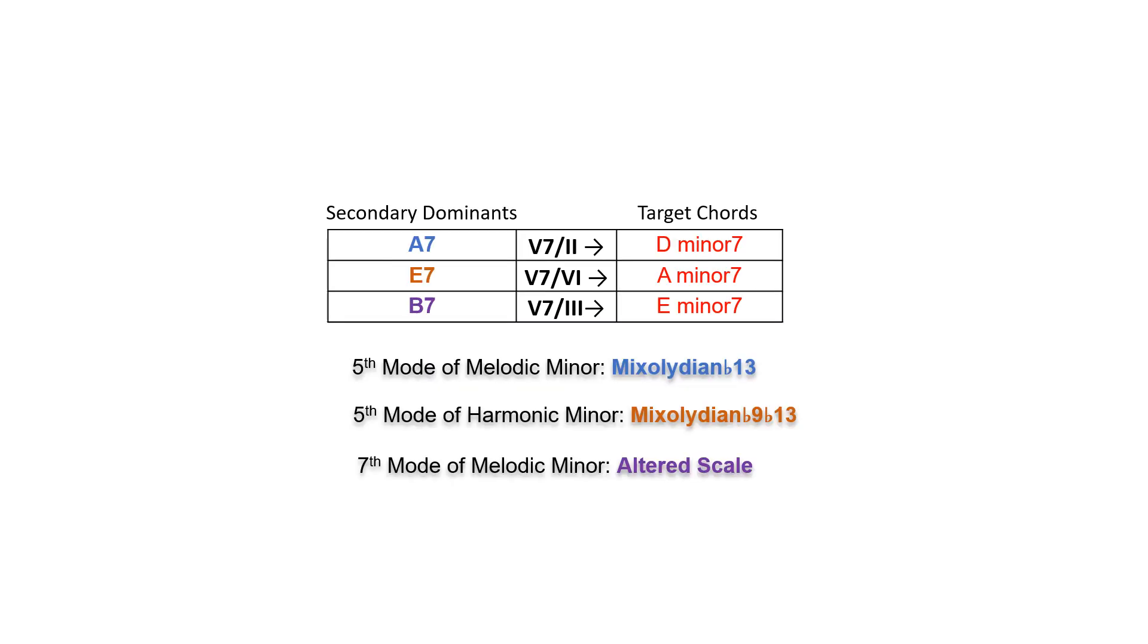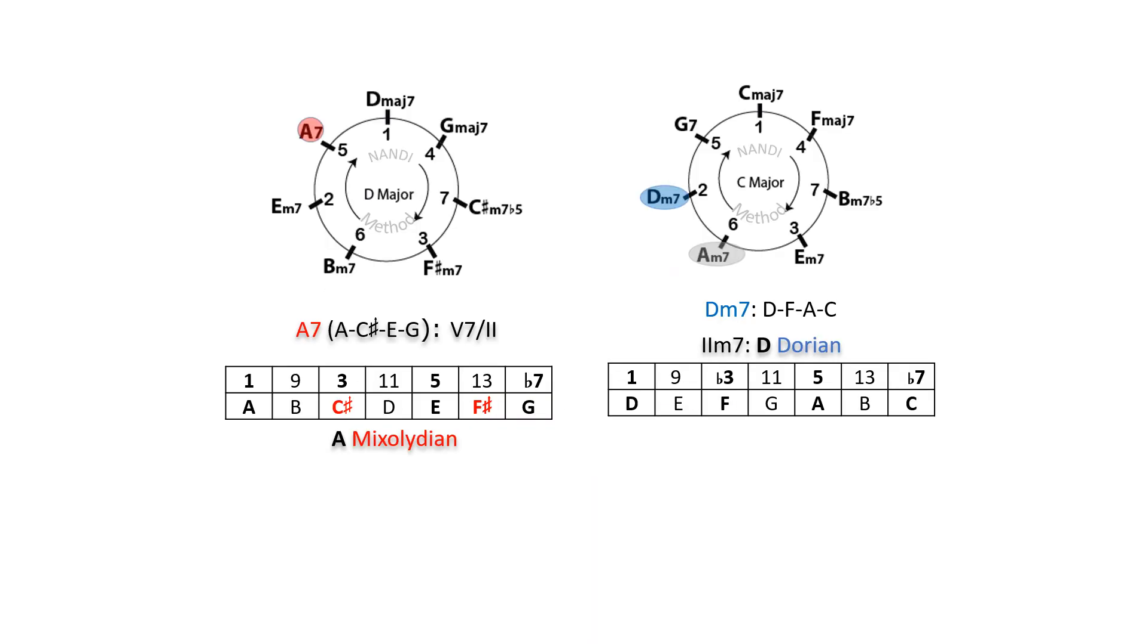When the target chord is minor, secondary dominance borrow from tonal minor scales, such as melodic minor and harmonic minor. For A7, borrowing A mixolydian, the fifth mode of D major, introduces two uncommon tones, C sharp and F sharp. To remain in C tonality, only one outside note is allowed, so this scale does not work.